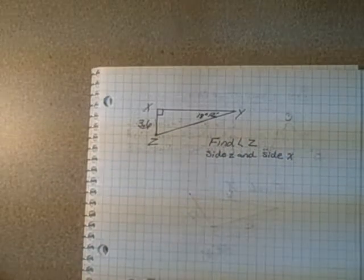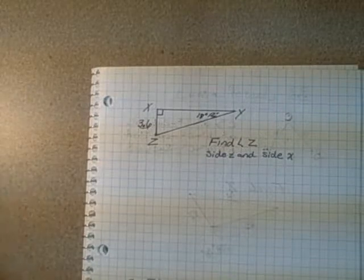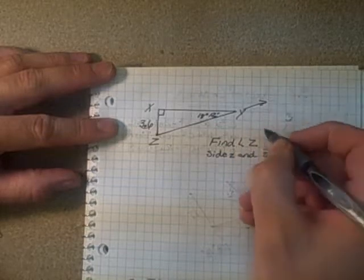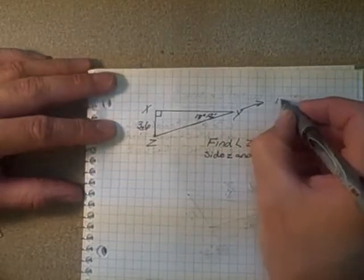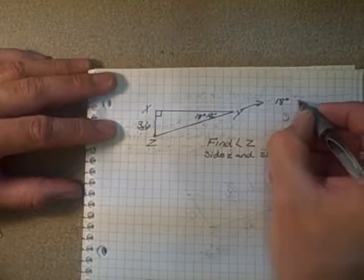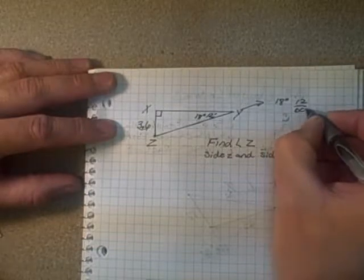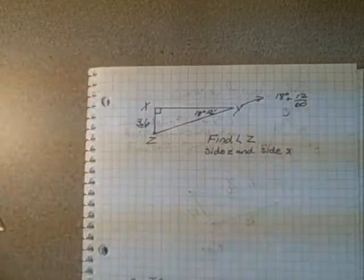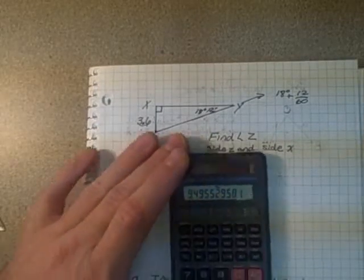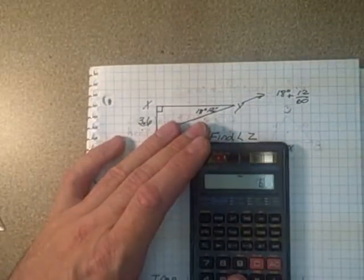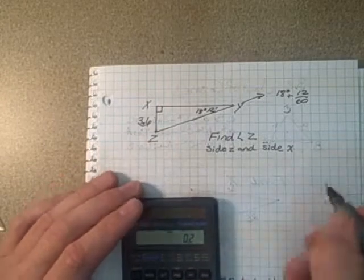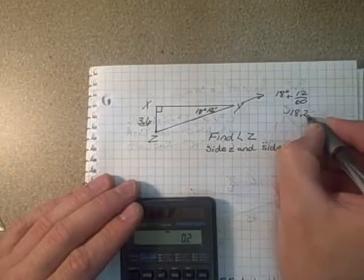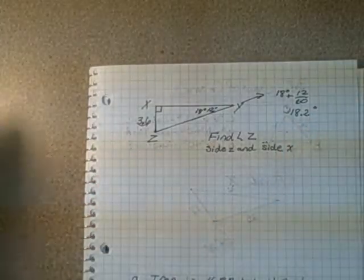So when you're doing minutes and seconds in your angles, you have to change them to an angle decimal. So change this into a decimal. So this would be 18 degrees plus 12 over 60. And there's no seconds, so we don't have to worry about that. So we take our calculator, 12 divided by 60, so it's 0.2. So then our angle is 18.2 degrees exactly.